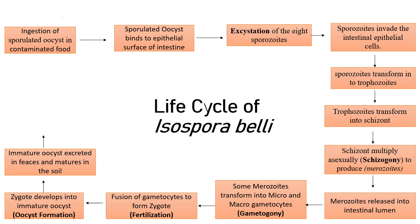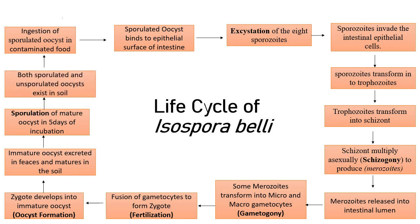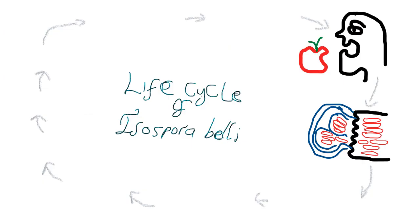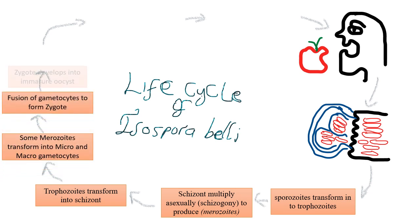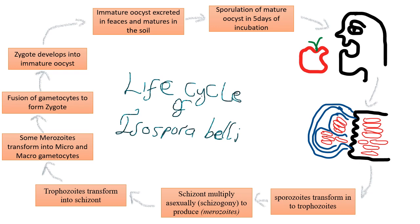The immature oocyst is then excreted in feces and matures in the soil. Maturation — sporulation — takes place in five days of incubation. Both sporulated and unsporulated oocysts exist in the soil waiting for return of the cycle, whereby a person ingests the sporulated oocyst. This is also illustrated in a summarized life cycle diagram showing ingestion of contaminated food, travel through the GI tract, binding to intestinal epithelial cells, and release of sporozoites.